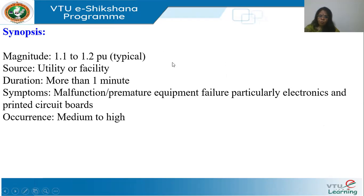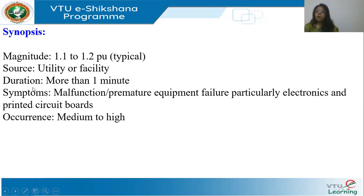Synopsis of over voltages: the magnitude is typically between 1.1 to 1.2 per unit. The source can be the utility or the facility. Duration is more than one minute. Symptoms include failure of equipment and malfunctioning. Occurrence is medium to high — they occur quite often in the system.